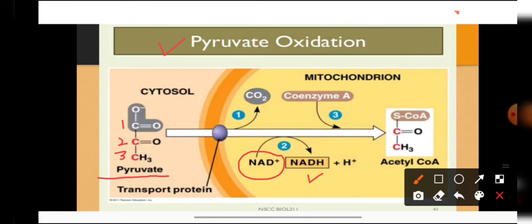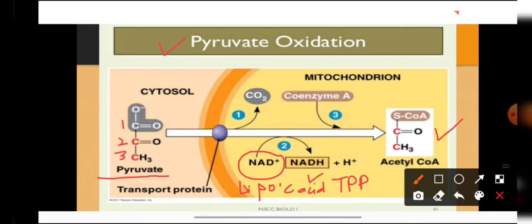One carbon of pyruvate is lost in the form of carbon dioxide, and coenzyme A associates with the two-carbon intermediate to form the final product, acetyl coenzyme A. This reaction takes place in the presence of the enzyme pyruvate dehydrogenase complex, because a number of coenzymes are associated with this enzyme, such as NAD⁺, TPP, and lipoic acid. Therefore, this enzyme is known as pyruvate dehydrogenase complex.